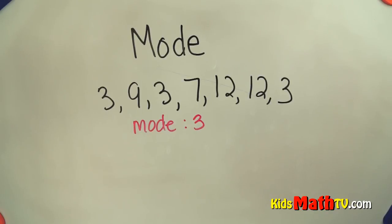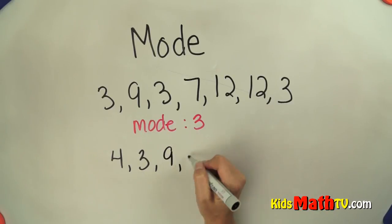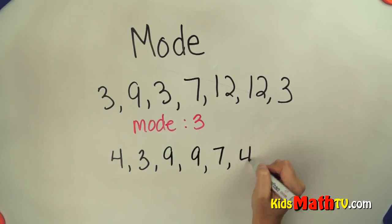Now sometimes you might have a list such as four, three, nine, nine, seven, four.